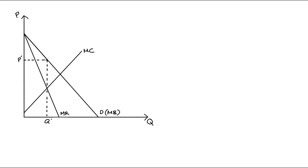On the diagram I have on the screen here I have a standard monopoly outcome, so the monopolist produces Q-star units and sells each unit for P-star. What's important to know is that the curves tracking the cost of production — that's our marginal cost curve — and the benefits of consumption — that's our demand curve or marginal benefit curve.